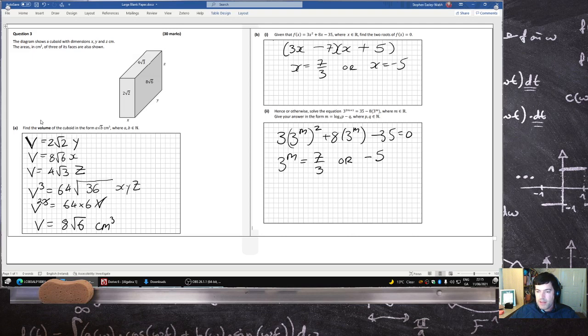But 3^m cannot equal -5, so you reject that. And you get 3^m = 7/3, which means 3^(m+1) = 7. So if I put log base 3 on both sides, you would get m + 1 = log₃(7). So m = log₃(7) - 1.